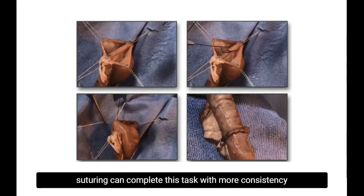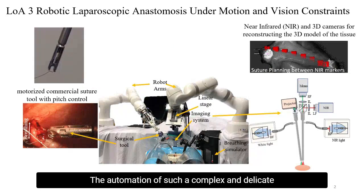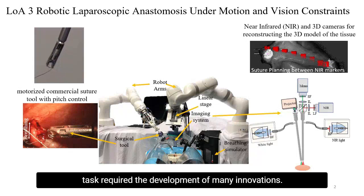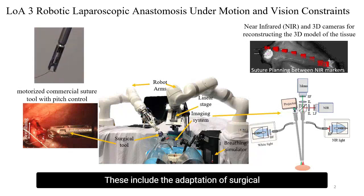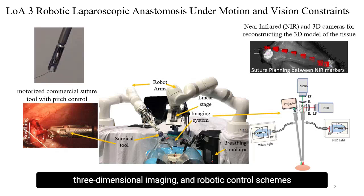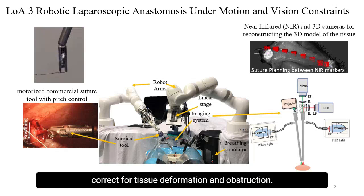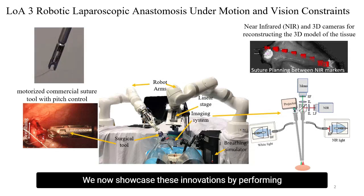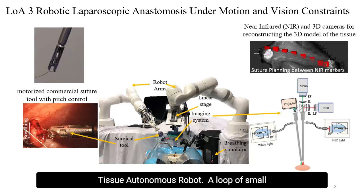Autonomous robotic suturing can complete this task with more consistency and repeatability than that of an expert surgeon. The automation of such a complex and delicate task required the development of many innovations. These include the adaptation of surgical tools to robotic platforms, the combination of near-infrared and structured light cameras for three-dimensional imaging, and robotic control schemes that generate surgical plans to autonomously correct for tissue deformation and obstruction. We now showcase these innovations by performing a small bowel anastomosis using the Smart Tissue Autonomous Robot.